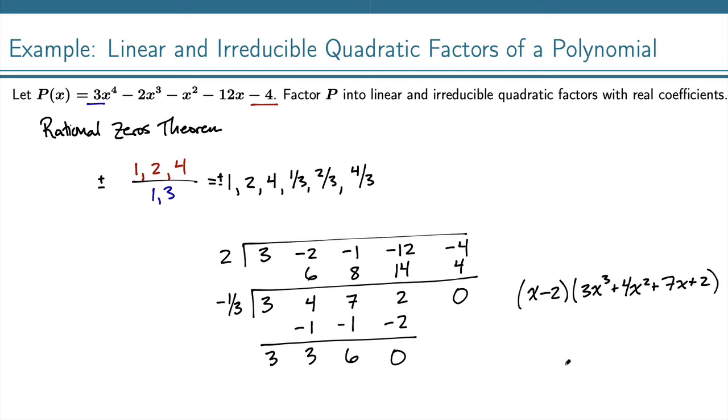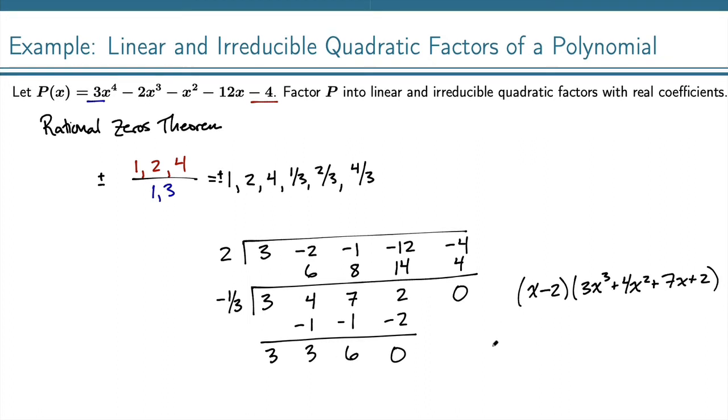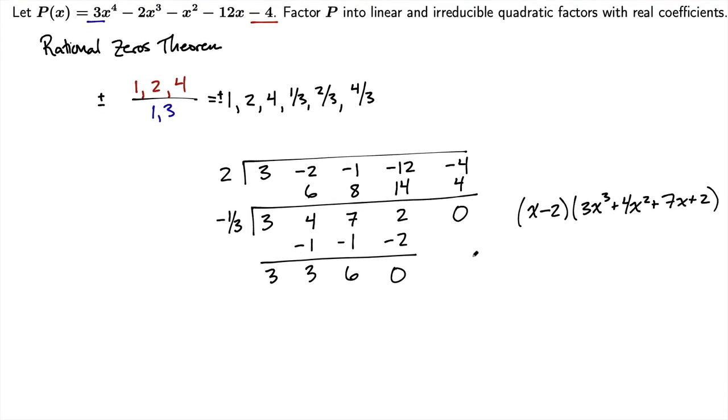So now we can go one step further. We've got here our x minus 2, and then the negative 1 third means that we have an x plus 1 third. And then this thing here, this is 3x squared plus 3x plus 6.